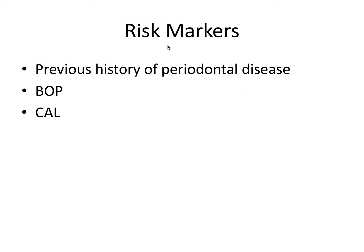Finally, risk markers have quantitative associations with disease — previous history, bleeding on probing, and most importantly, clinical attachment loss. Clinical attachment loss is one of the most important clinical indicators of periodontal disease and tissue destruction, making it a key risk marker for someone who may be getting or may have already had periodontal disease.